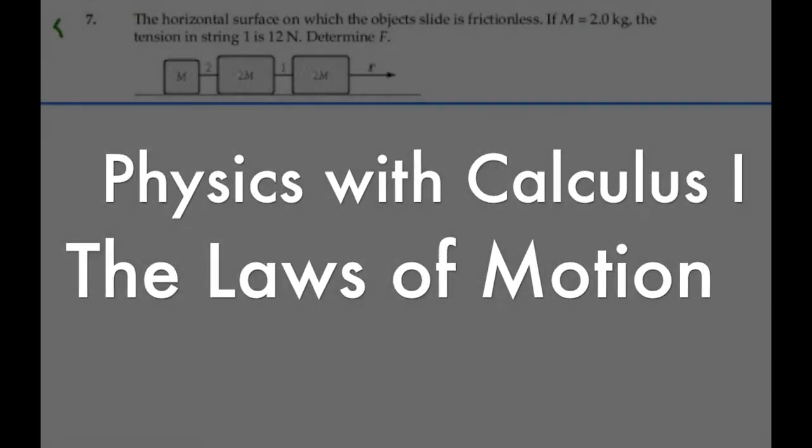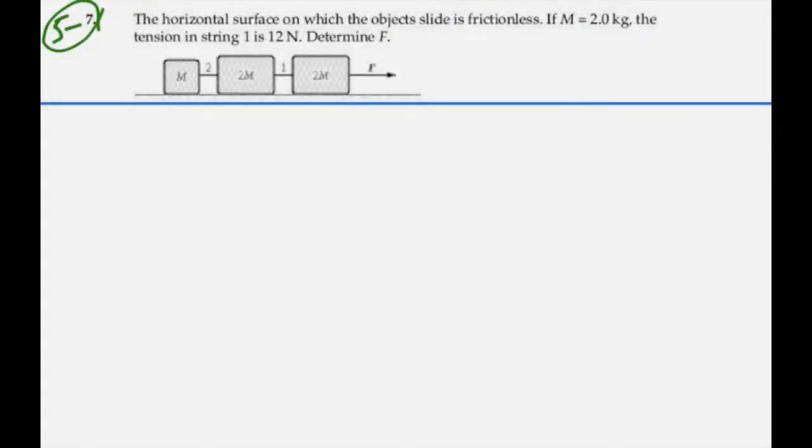Take a look at problem 5.7. It says the horizontal surface on which the object slides is frictionless. If m is equal to 2 kilograms, the tension in string number 1 is 12 newtons, determine F.